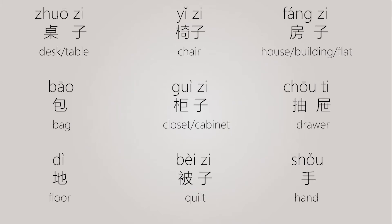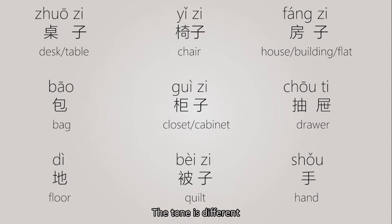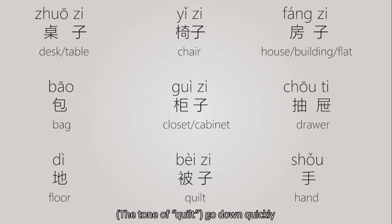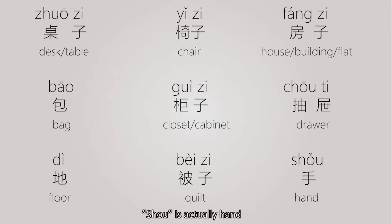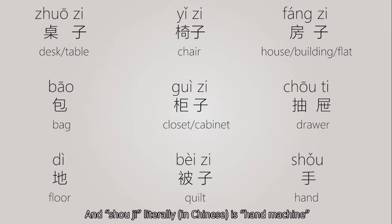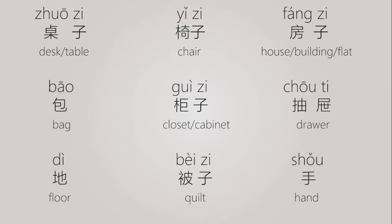桌子 (table), 椅子 (chair), 房子 (house), 包 (bag), 柜子 (cabinet), 抽屉 (drawer), 地 (floor), 被子 (blanket) — note the tone: 被 stays high and flat; 杯 goes down quickly. 手 (hand) — remember 手机, the cell phone: 手 means hand, so 手机 literally means 'hand machine'.